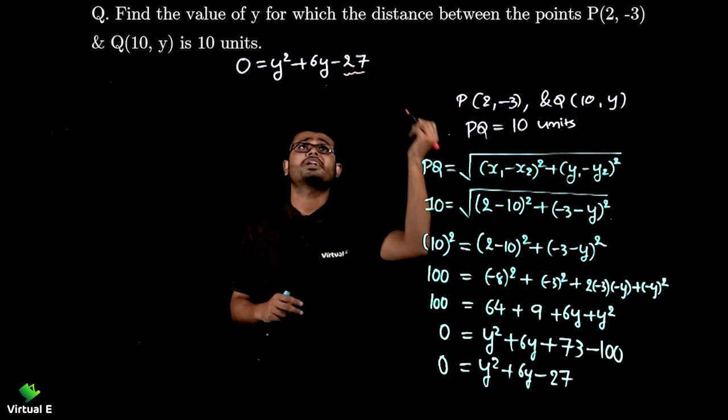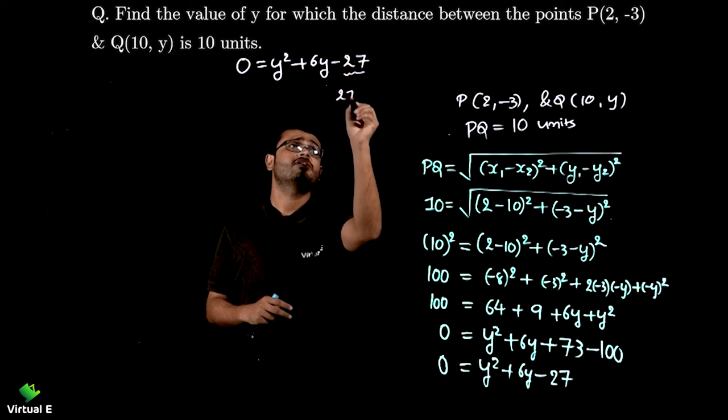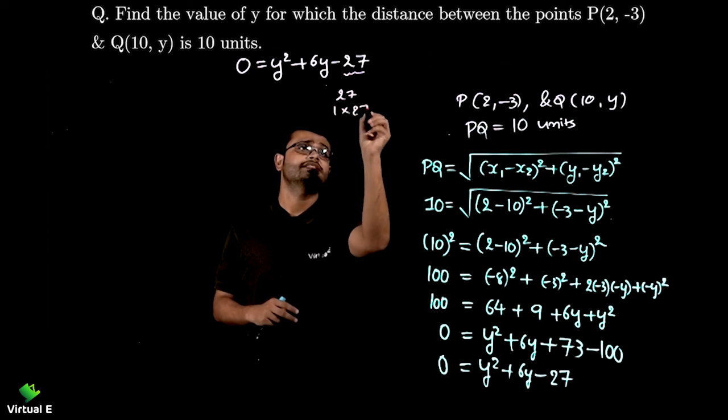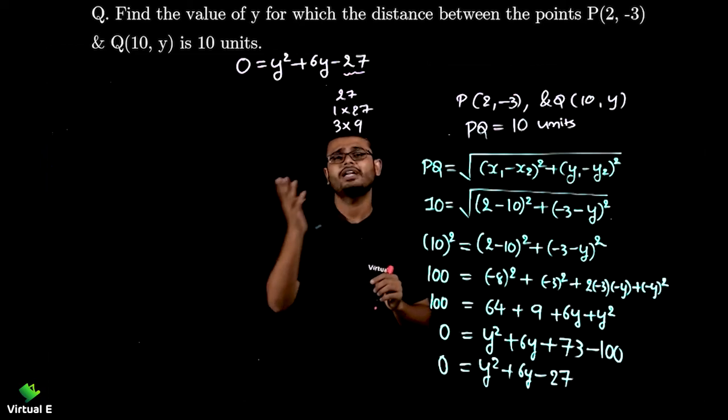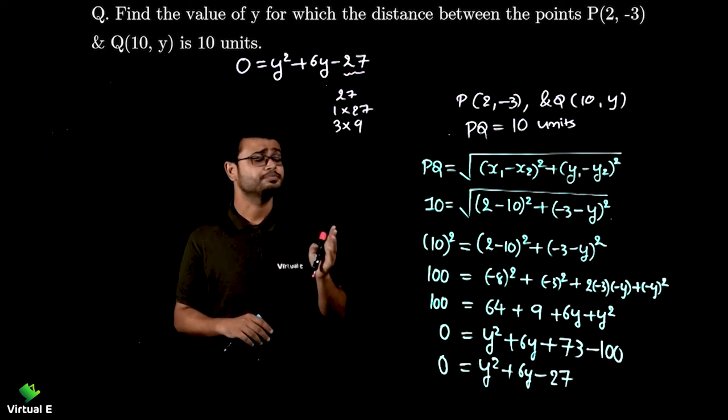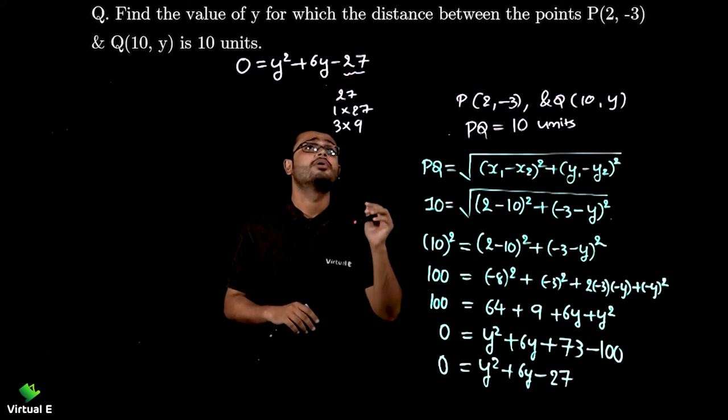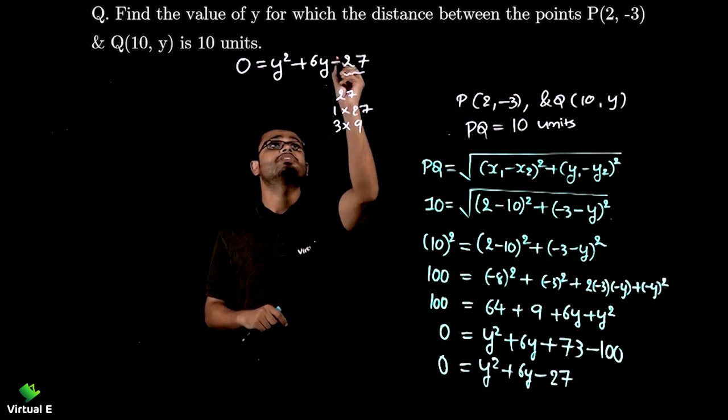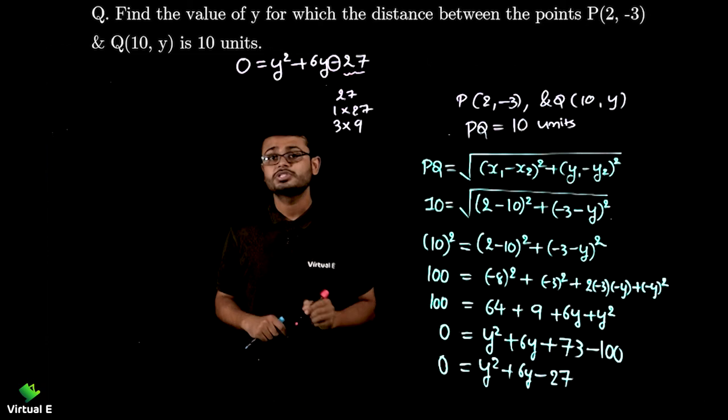So constant which is 27. So factors of 27: 1 into 27 then 3 into 9. That's it. Another is 9 into 3. Don't integer. I told you. Okay so what I am supposed to do with these factors. I am supposed to subtract.